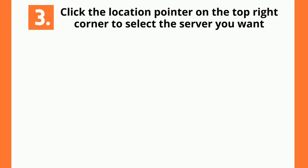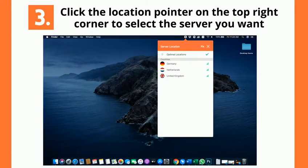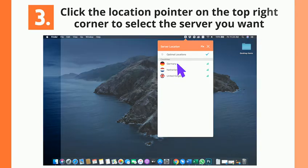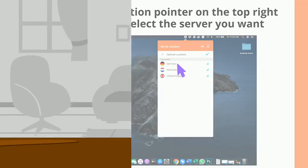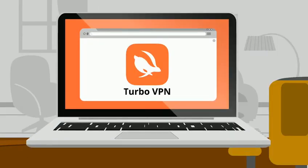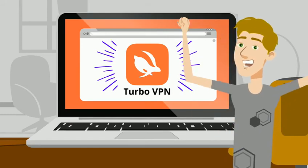You can also click the location pointer on the top right corner to select the server you want. Get TurboVPN for Mac OS today!